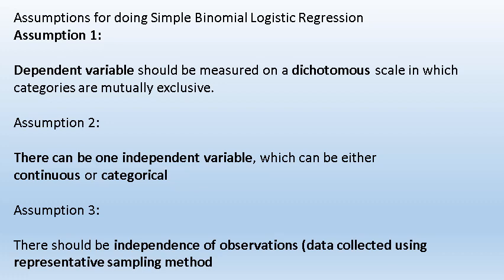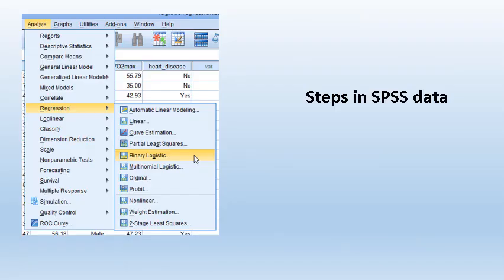There are some assumptions for doing simple binomial logistic regression. Assumption one: the dependent variable should be measured on a dichotomous scale in which categories are mutually exclusive. Assumption two: there can be one independent variable which can be either continuous or categorical. Assumption three: there should be independence of observations, and data should be collected using a representative sampling method.